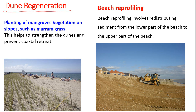Dune regeneration relates to sand dune formation, where wind from the coast blows materials up the beach and, when there is an obstacle like a plant, the sand gets deposited to form a dune. To stabilize the beach, vegetation is planted — such as marram grass on slopes. Planting more vegetation helps to strengthen the dunes and prevent coastal retreat, as the sand cannot be eroded easily, holding material in place and strengthening the dunes.